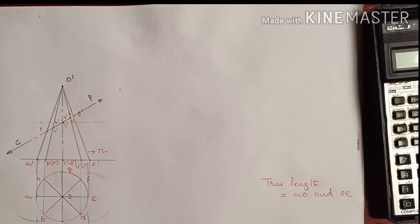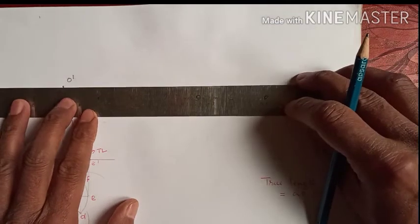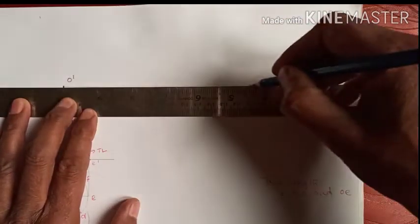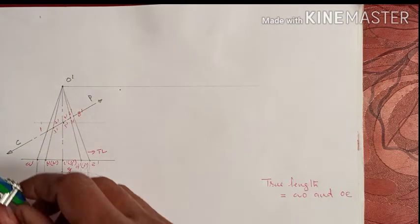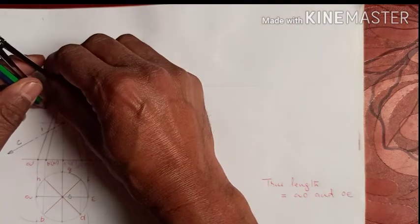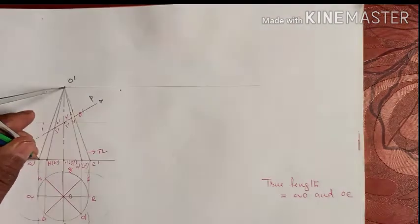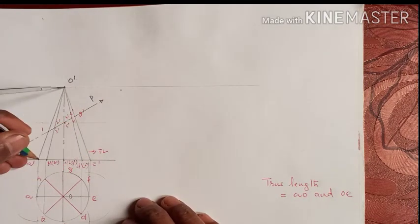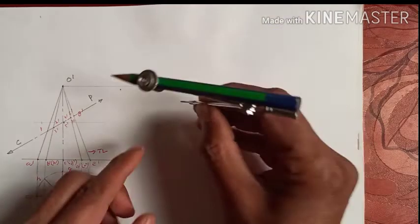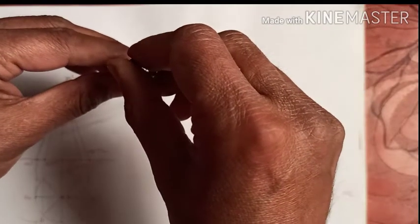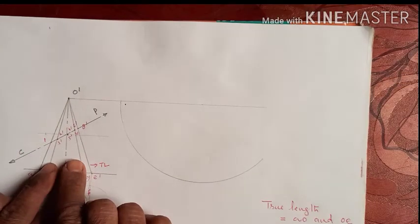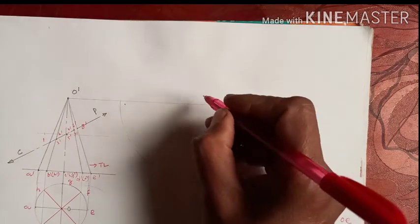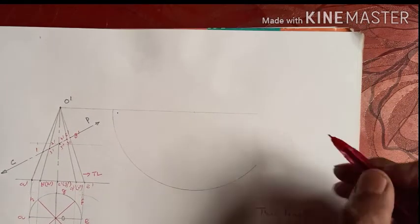We produce the true generator line and place the compass on O' keeping the radius equal to O'-A', since this is our true generator length. We draw an arc for the development — when we open up the cone, it will look like a sector (pi shape). We need to find the angle theta of this sector.